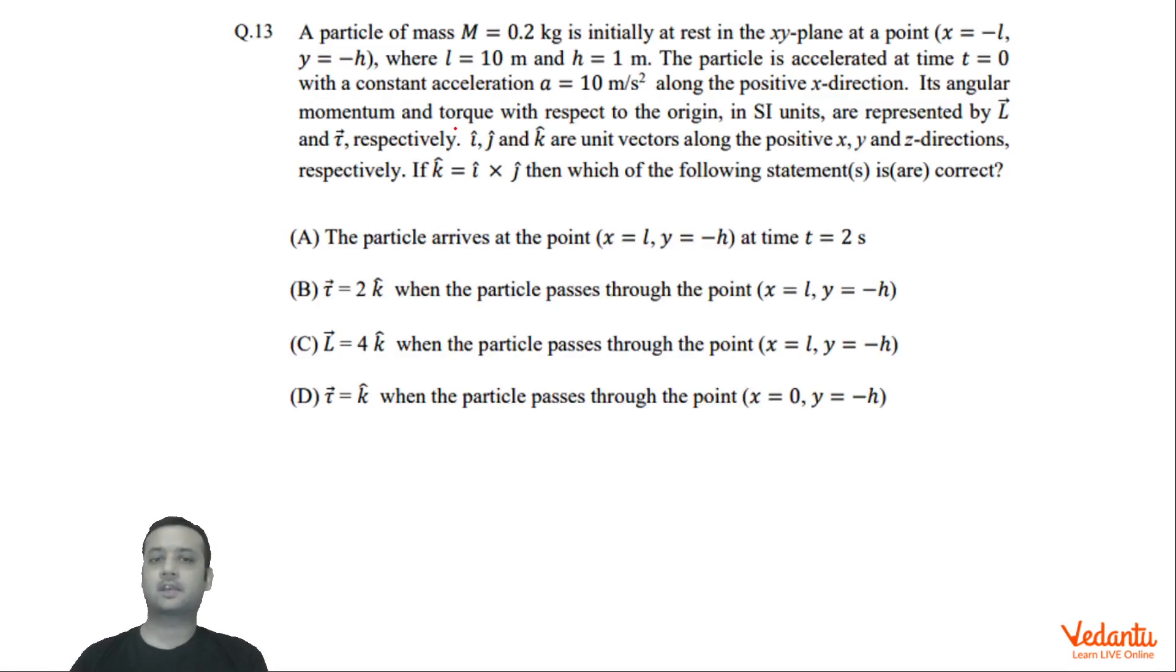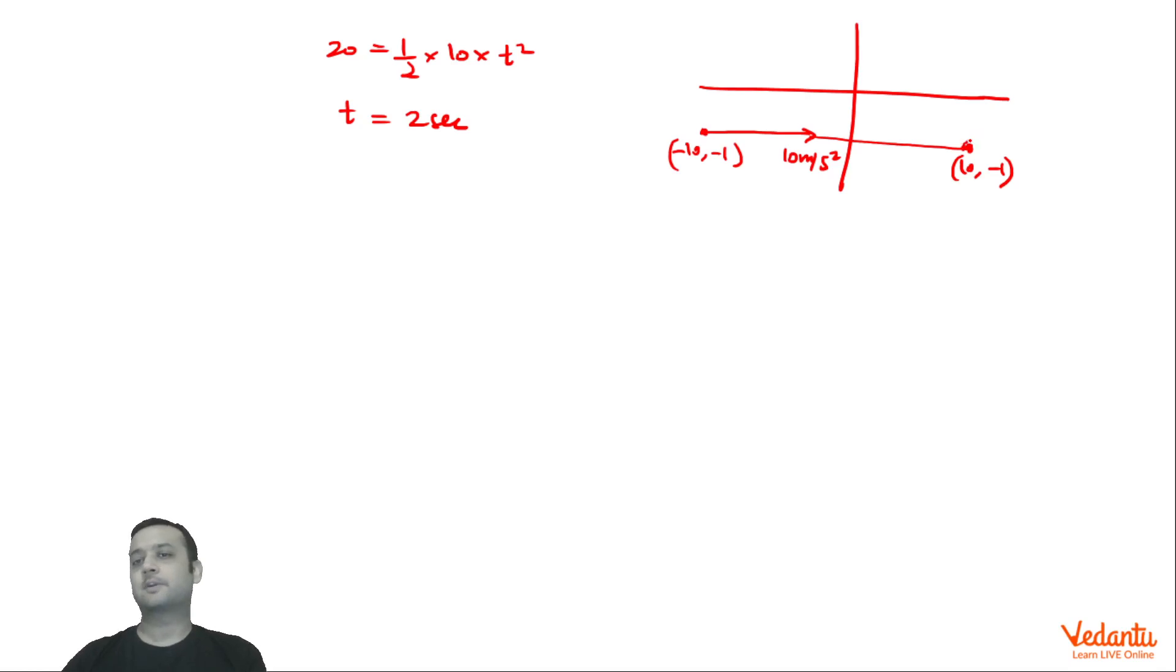So option A is correct. Torque = 2k cap when particle passes through the point x=l, y=-h. L again was 10 and h was 1, so l, -h means 10, -1, meaning at this point. By the way, if you think carefully, acceleration direction is this way, mass is 0.2, that means force direction is also this way. So about the origin, torque is constant because r perpendicular will be fixed and F will be fixed, and direction will be k cap. This is x-axis, this is y-axis.